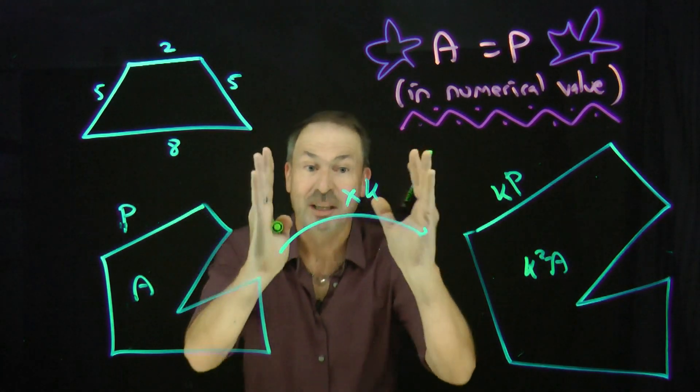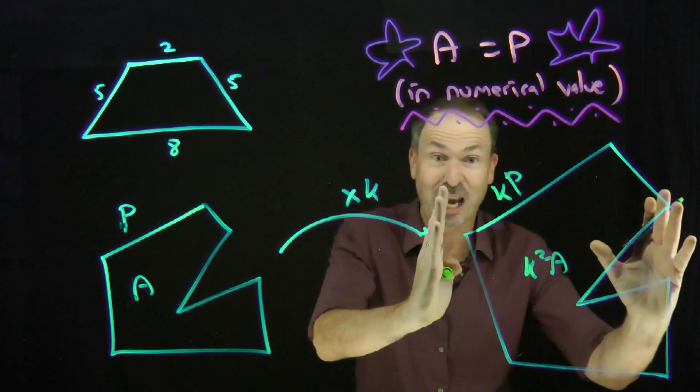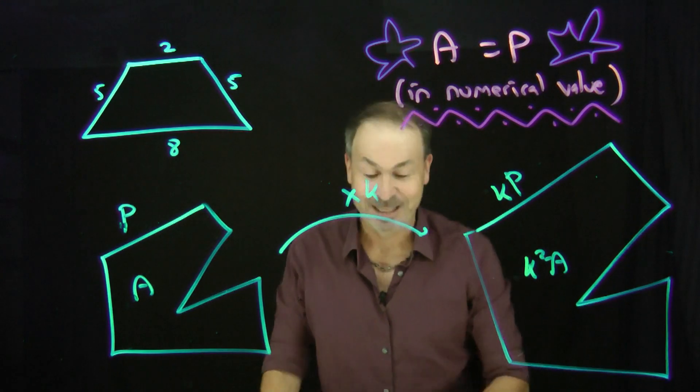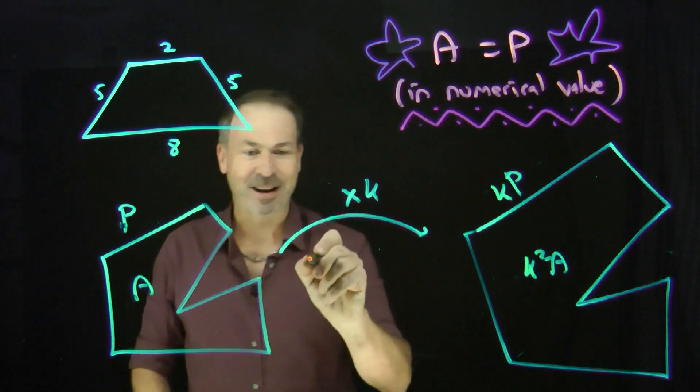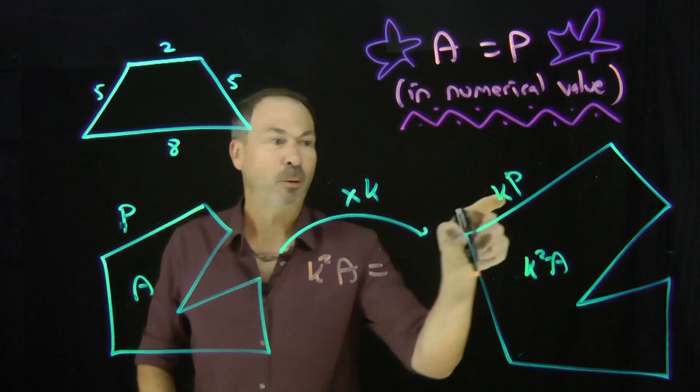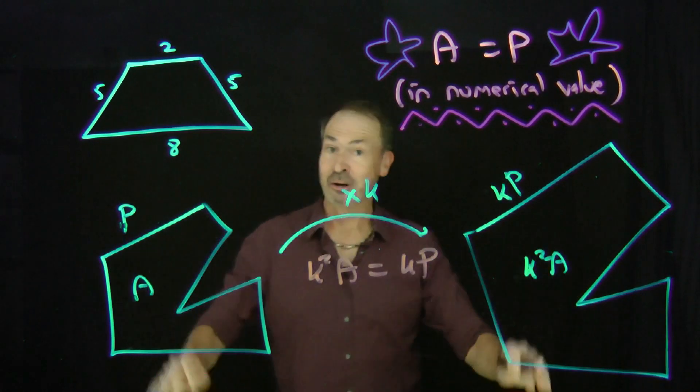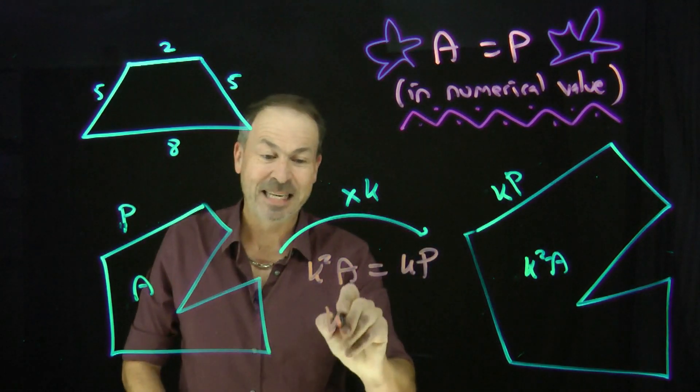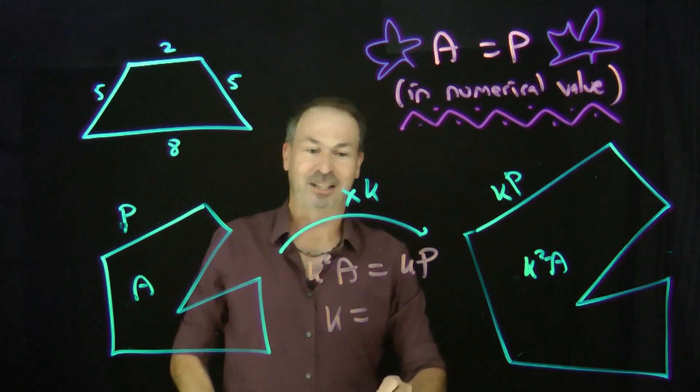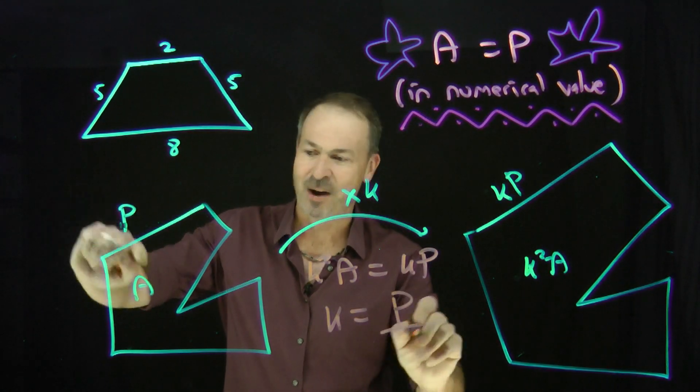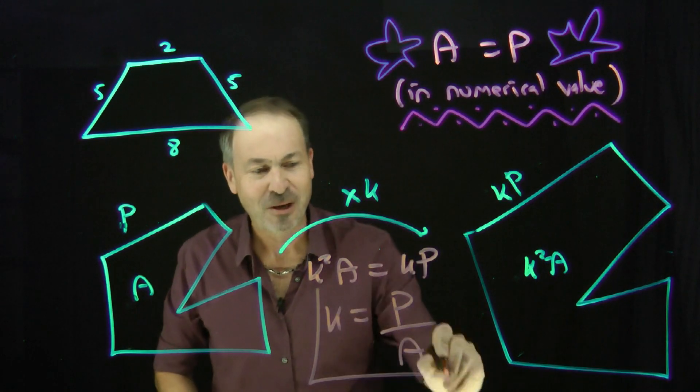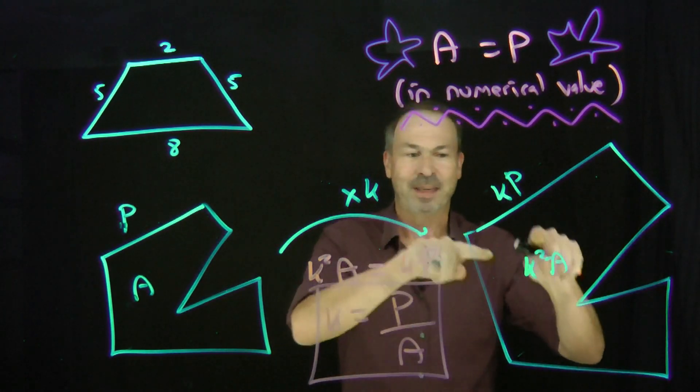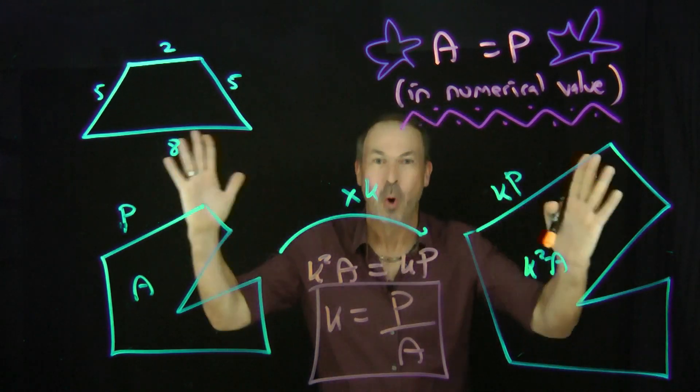The challenge now is, can I choose a good scale factor so for this new shape over here, its area equals its perimeter? And the answer is yes. I want its area, K squared A, to equal its perimeter, KP, at least the numerical value. Divide both sides by K, divide both sides by A. It tells me, please choose a scale factor given by the original perimeter divided by the original area. If you use that scale factor there, you are guaranteed to get a new shape with area equal perimeter.